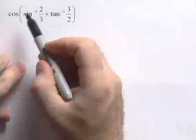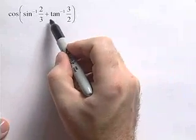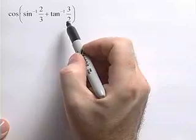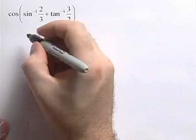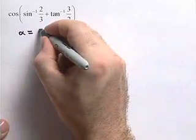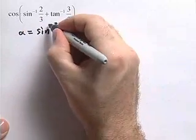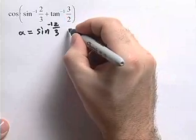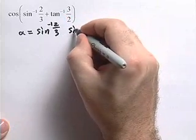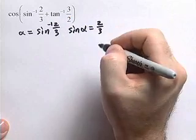Here we're going to find the exact value of a trigonometric expression. We want to find the exact value of cosine of sine inverse of 2 thirds plus tangent inverse of 3 halves. We're going to start off by defining two angles. We'll let alpha equal sine inverse of 2 thirds, which means that the sine of alpha is equal to 2 thirds, and alpha needs to be in quadrant 1.